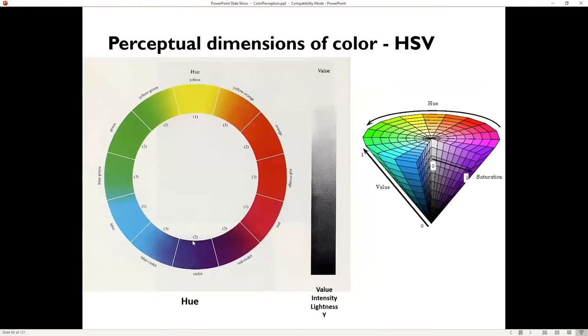Here's another way it's commonly drawn. You can think of hue as around the circle. You can think of value as the intensity, brightness, lightness, and in some other color spaces it's called Y.